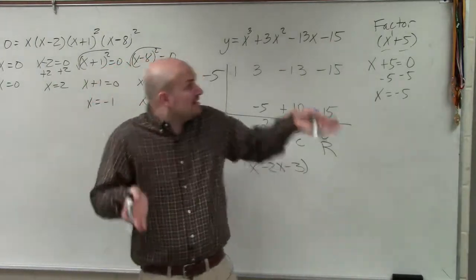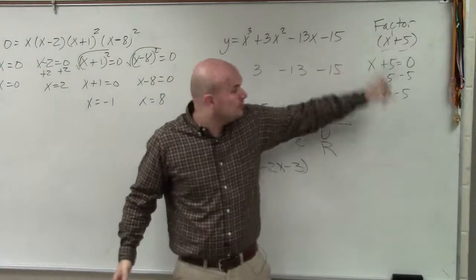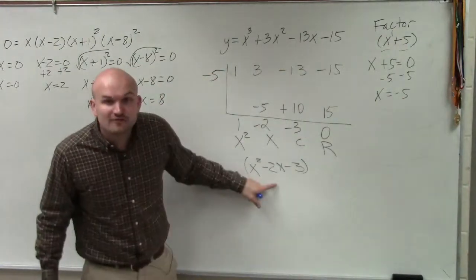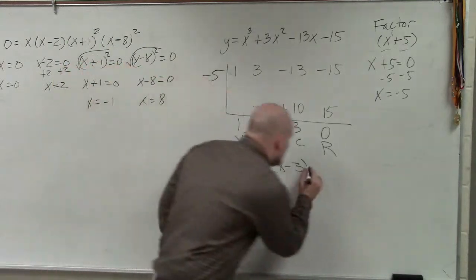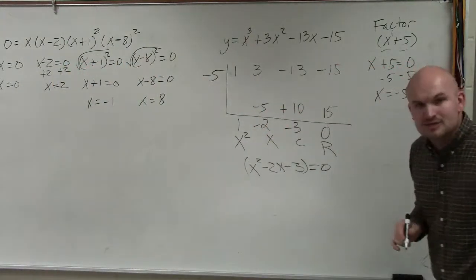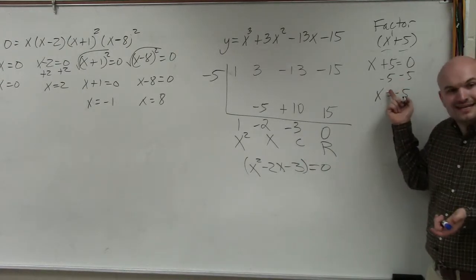So how do we go from that? Again, the question is solve for the 0's. So if we know one factor, we found the 0. If we know the other factor, to find the 0's, we have to set it equal to 0. So now you set it equal to 0. Now, can we just solve for x like this? No, it's not that easy, right?